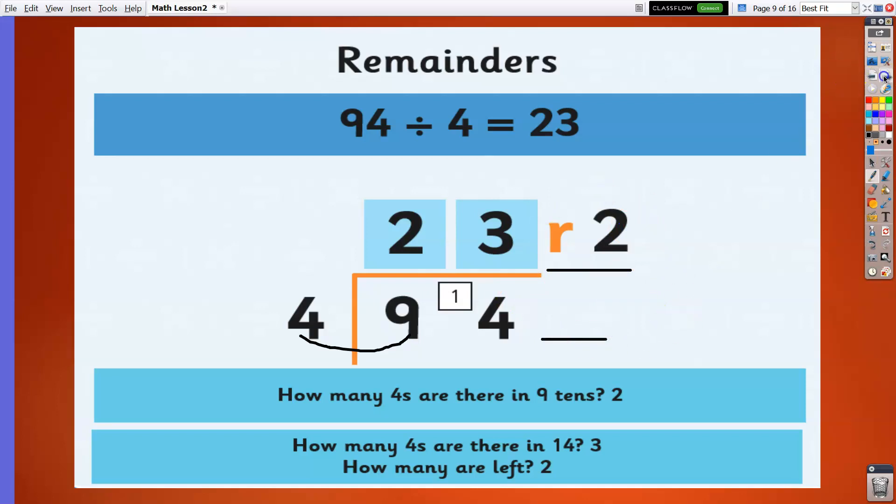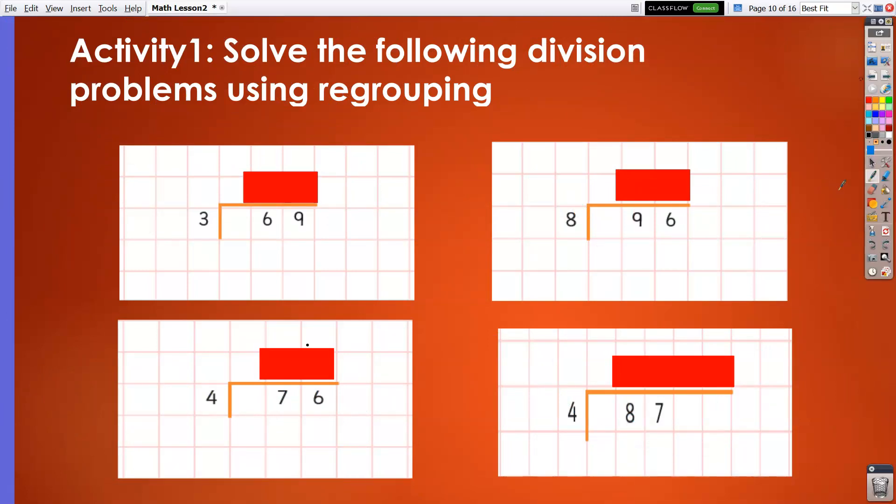Now it's your turn. Solve the following division problems using the regrouping method. Pause the video and write your answers. Time is up. Now let's reveal the answers. 23 divided by... 3 divided by... wait, the first problem: the answer is 23. Next we got 9 divided by 8 is 1, and we get remainder 1, so we put it in between, now it becomes 16. 16 divided by 8 is 2, therefore the answer is 12.